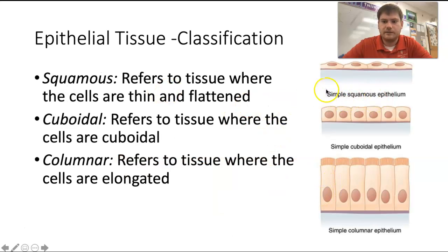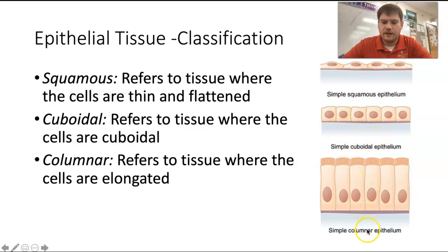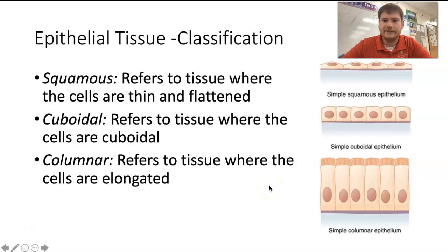The second part of the name is their shape. Squamous — think of squash — so they're kind of flattened. Cuboidal means they're shaped like cubes. And columnar means they're shaped like columns, so they're long. Usually their nuclei are towards the bottom, and they also often have cilia. That is how most of them are classified, with a couple of exceptions we'll talk about.